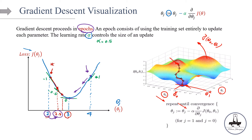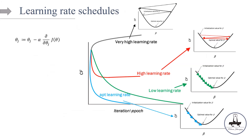An important thing to remember is that when doing gradient descent with multiple parameters, the parameters are updated simultaneously. It's not that theta_0 is optimized first and then theta_1. No — theta_0 and theta_1 are optimized simultaneously at each step. The algorithm calculates the gradient and updates both parameters at the same time. Now in the next slide, let's talk about what happens with different learning rates.